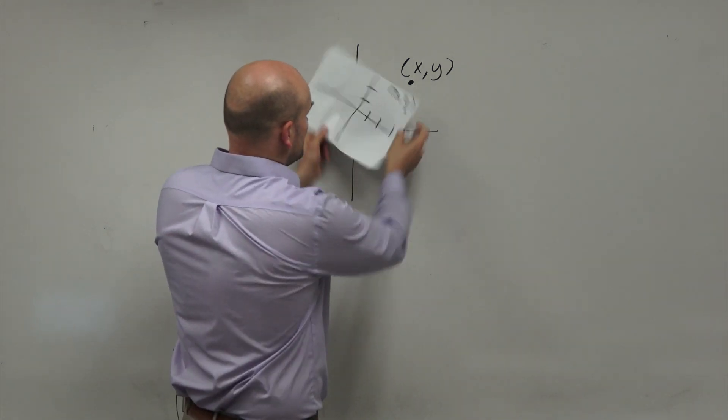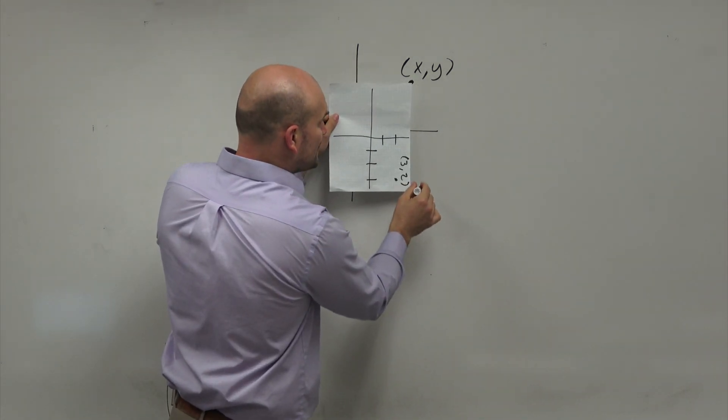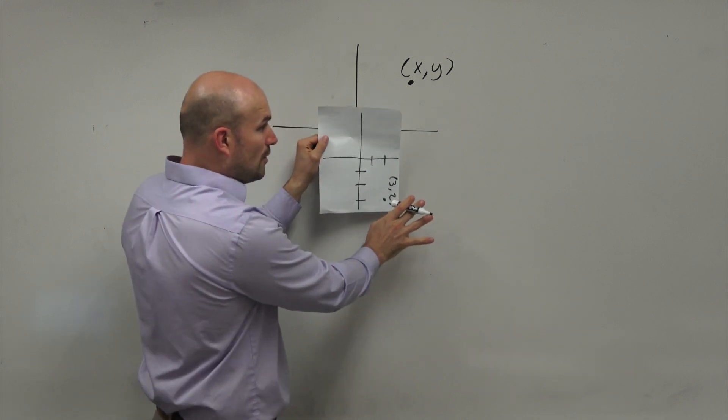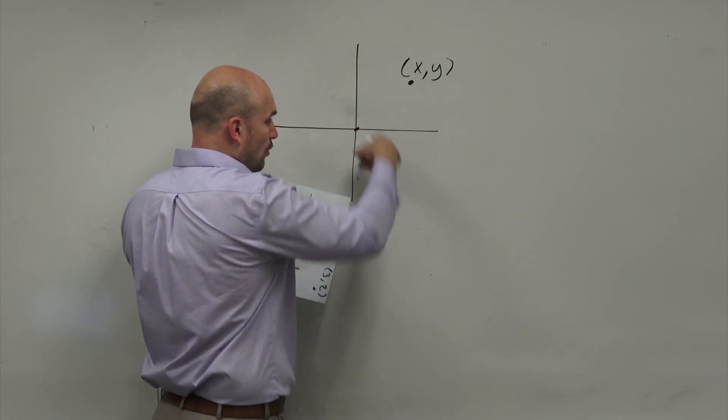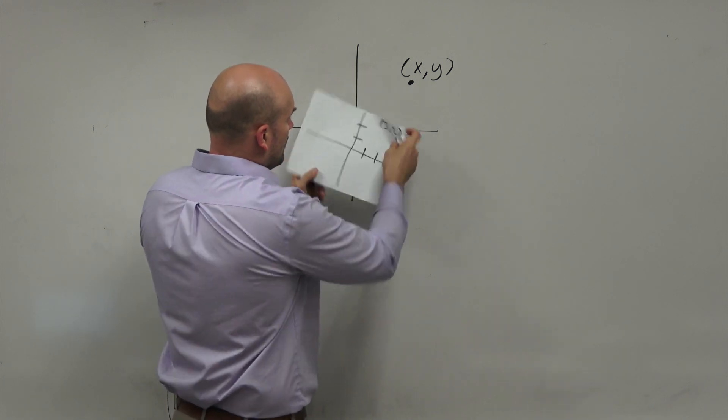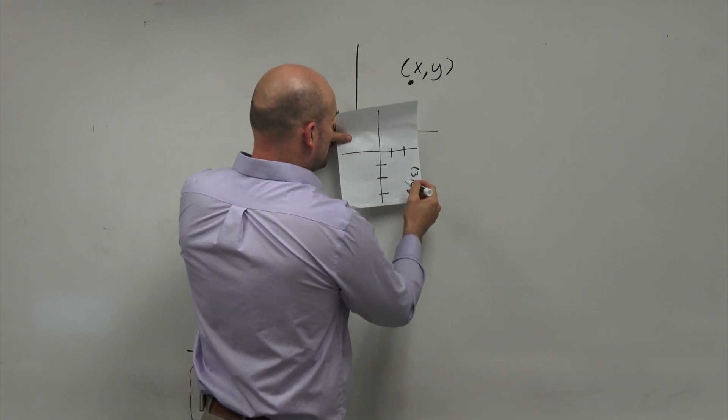that when I rotate something clockwise here, it's now going to be in the fourth quadrant. Now, any coordinate points down in the fourth quadrant, the y-coordinates can be negative, right? Because from the origin, you're going down.